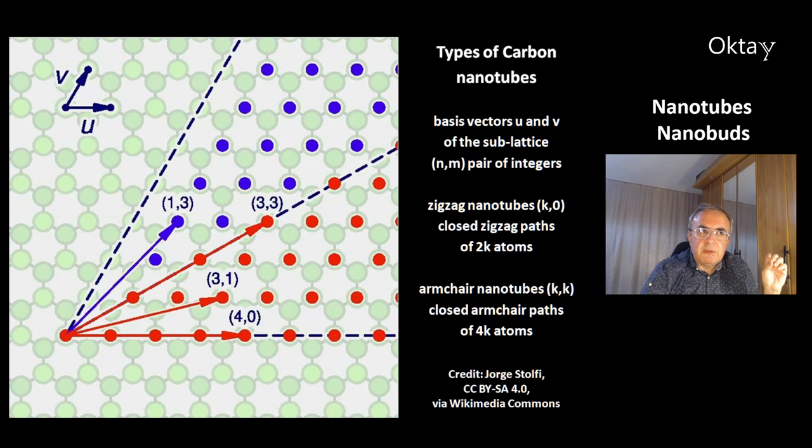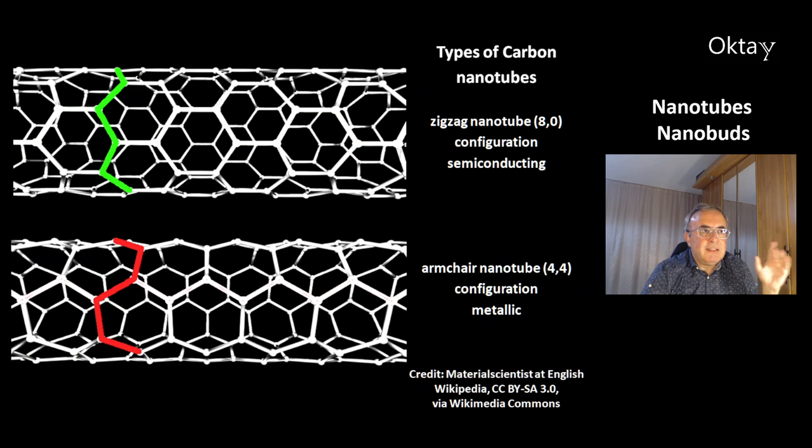This is a description of carbon nanotubes with basis vectors u and v of the sub-lattice. There are pairs of integers n and m. The zigzag nanotubes have integers k and 0, with closed zigzag paths of 2k atoms. Armchair nanotubes have integers k and k, with closed armchair paths of 4k atoms.